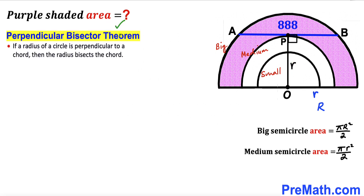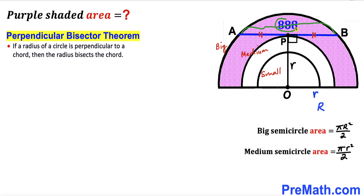Now let's recall the perpendicular bisector theorem: if a radius of a circle is perpendicular to a chord, then the radius bisects the chord. Here AB is the chord and radius OP is perpendicular to it, so AP equals BP. Since the whole chord AB is 888, then AP equals 444 and BP equals 444 as well.